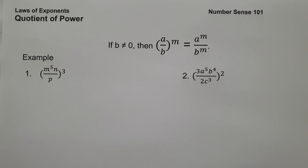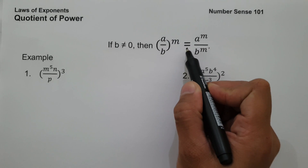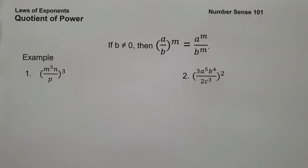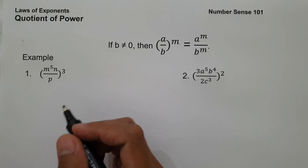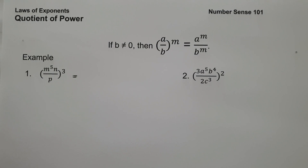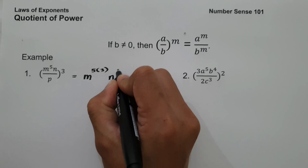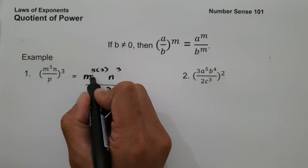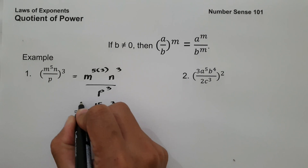Next, we have quotient of power. When we say quotient of power, if b is not equal to 0, then quantity a over b raised to exponent m gives us a raised to m over b raised to m. All we have to do is distribute the exponent on the numerator and denominator. On example number one, we have quantity m raised to 5, n, over b, raised to 3. Distributing gives us m raised to 5 raised to 3, and n raised to 3, all over b raised to 3. Simplifying: m raised to 15, n raised to 3, all over b raised to 3. And this will be our answer.